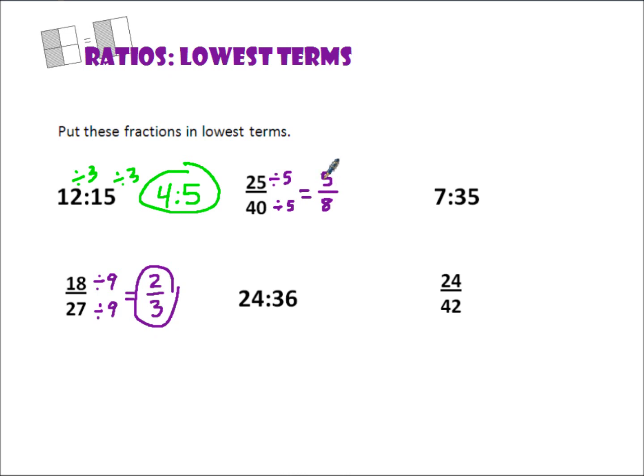5 is prime, so 5 won't go into 8. This must be in lowest terms. So, we'll circle 5 to 8 as our fraction in lowest terms.